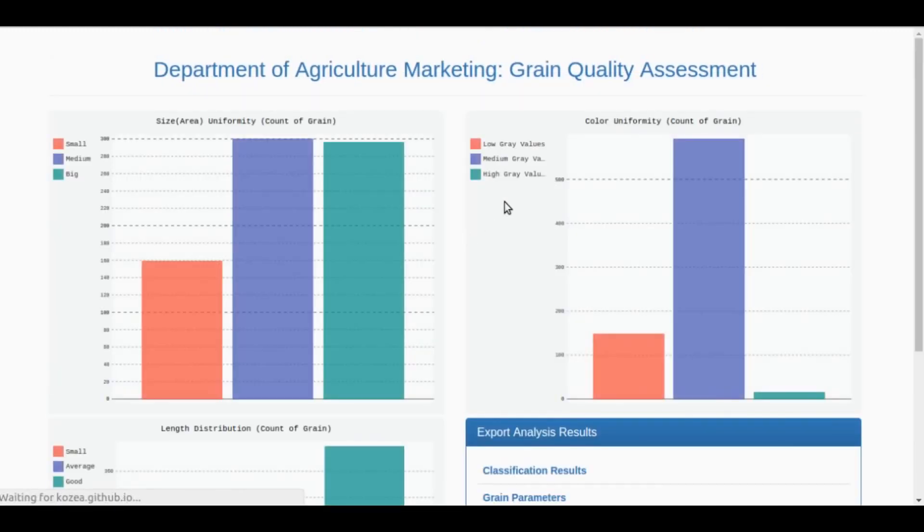Clicking detailed analysis gives the bulk property of sample. Over here, graphs of area, color, and length have been displayed. This tells you the boldness, color quality, and size features of the sample.